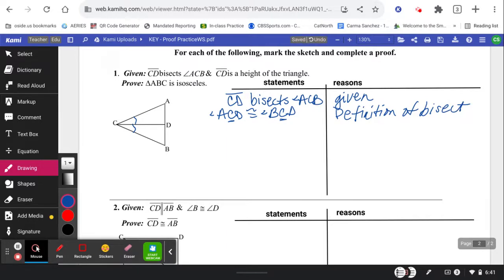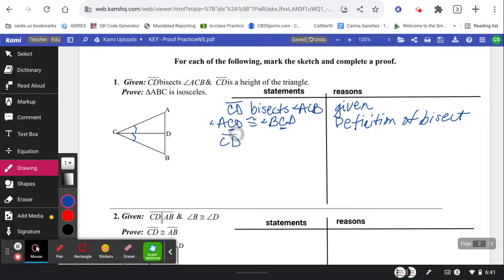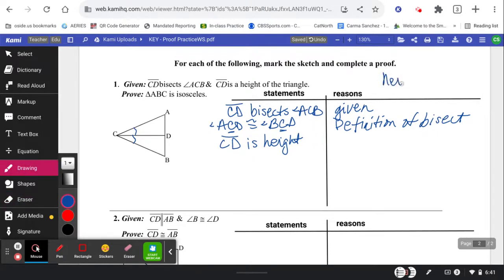What else did they tell me? They told me that CD is a height of the triangle. What the heck is a height? Well, a height is an altitude, like same definition as an altitude. So we just wanted you to be exposed to that other word.